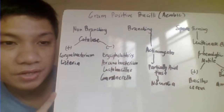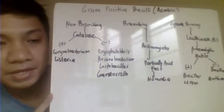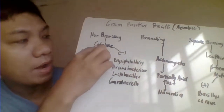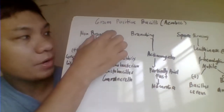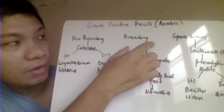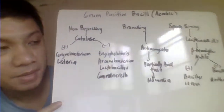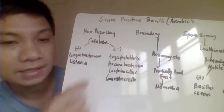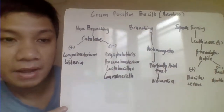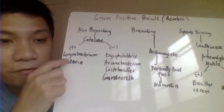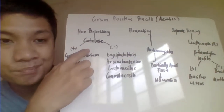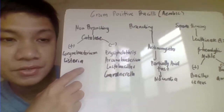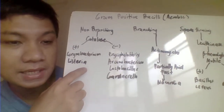So for general classification, we can classify your gram-positive bacilli as either non-spore forming non-branching, branching, or spore forming. For your non-branching, we can classify them according to their catalase reaction. Catalase positive, non-spore former, non-branching includes your genus Corynebacterium and Listeria.